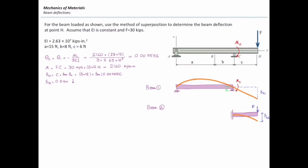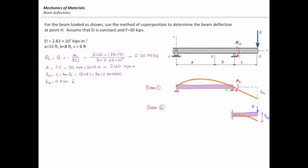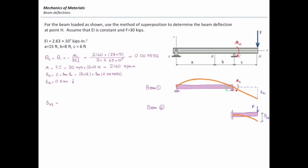Now I will consider the second part — the cantilever beam. On top of the indirect deflection, we also have direct deflection in the cantilever part. Going to the table, I'm looking for deflection at the free end, which is PL cubed over 3EI. Delta H2 equals PL cubed over 3EI, ignoring sign for now.